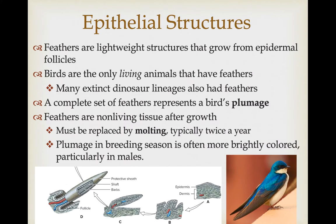Feathers are incredibly lightweight structures that grow from epidermal follicle cells, and birds are the only living animals that have feathers. However, there is clear evidence that many extinct dinosaur lineages also had feathers, and this is the group from which birds are derived. A complete set of feathers is called a bird's plumage. Because feathers are non-living structures after they grow in, they eventually fall apart and have to be replaced regularly — this process is called molting, which typically occurs twice a year in birds, usually producing a dull plumage and a more brightly colored one, particularly in males during mating season.